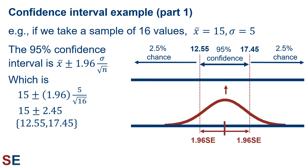Based on this, we can say there's a 95% probability that the population mean we took this sample from is between 12.55 and 17.45. Note that there's a 2.5% chance the population mean is larger than 17.45 and a 2.5% chance the population mean is smaller than 12.55. That would occur when sampling error causes our sample mean to be smaller or larger than the true population mean just due to randomness.